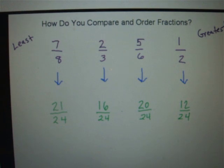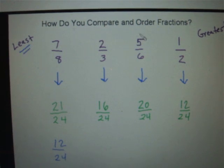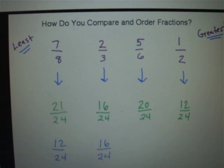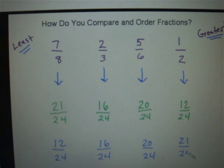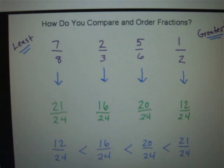Now we can simply compare the numerators. The smallest numerator is 12, so 12/24 is our smallest fraction. The next largest numerator is 16, so 16/24 is the next largest fraction. The next is 20, so 20/24 is the next largest. And finally 21 is the largest numerator, so 21/24 is the largest fraction. So ordering from least to greatest: 12/24 < 16/24 < 20/24 < 21/24.